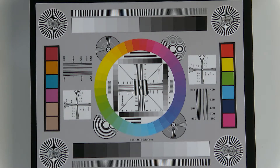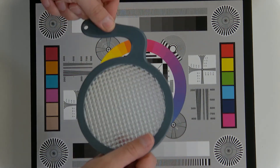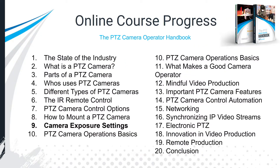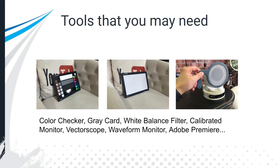I also have a white balance filter you can get online to quickly white balance your cameras. We've already talked about what a PTZ camera is, who uses them, the different types, the IR remote control, many different camera control options, and how to mount a PTZ camera. Now it's time to really talk about getting the best picture from your camera — and at the very core level, the iris and the shutter speed are the very first things you want to consider for camera exposure.